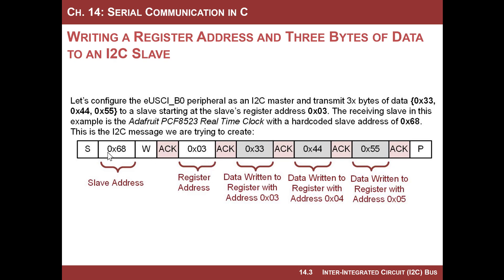In total, our message will actually have four pieces of data. But the way this is interpreted per the real-time clock datasheet is that the first piece of information is the register address. Every byte written after that goes to the next address in the real-time clock. So we're going to write 33 to register address three, then it increments — 44 goes to register address four, and 55 goes to register address five.